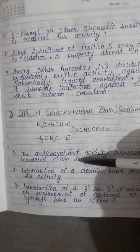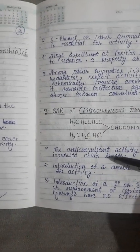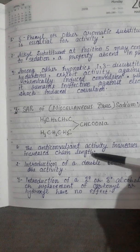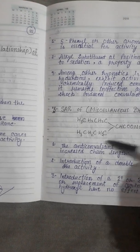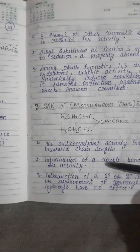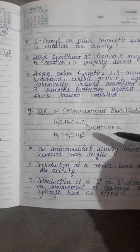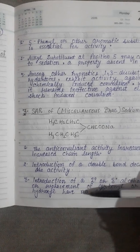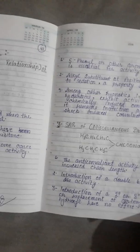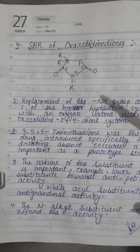SAR of the miscellaneous drug sodium valproate: anticonvulsant activity increases with increasing chain length of the drug molecule. Introduction of a double bond decreases the activity. Introduction of a secondary or tertiary alcohol group, or placement of a carbonyl or hydroxyl group, has no effect on activity.